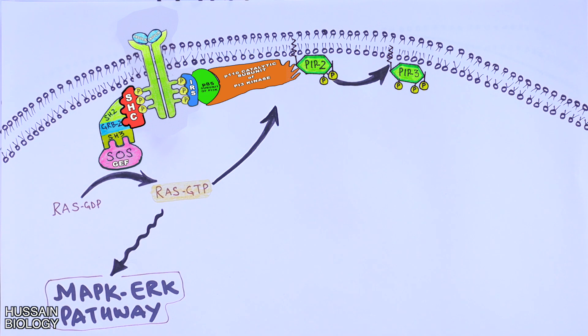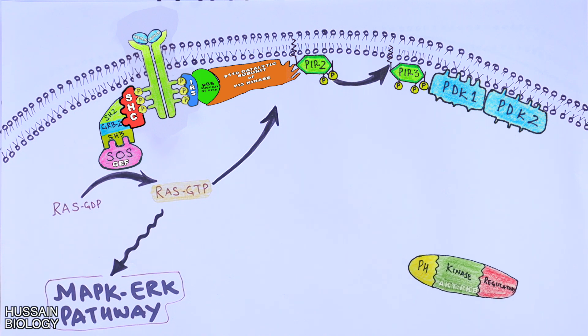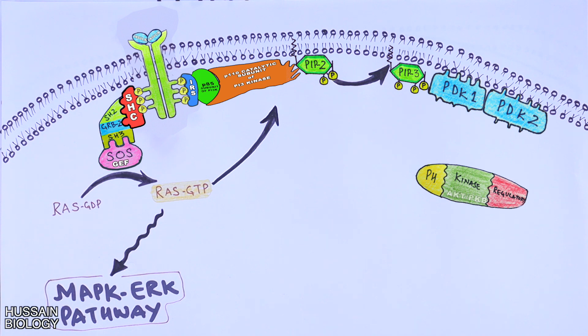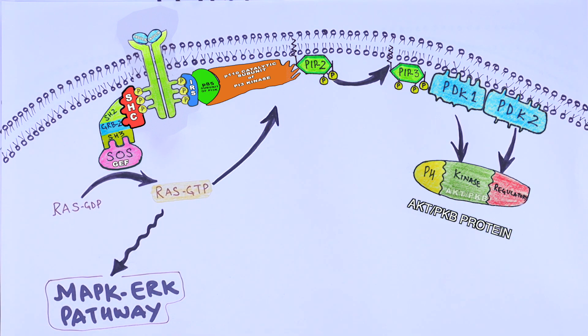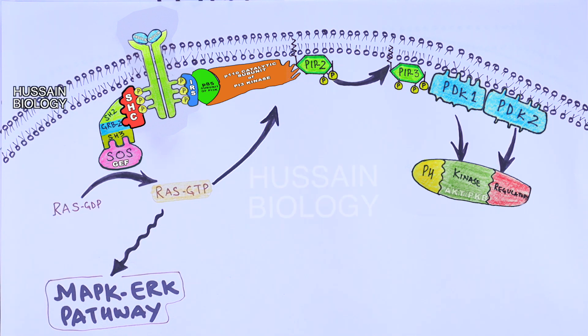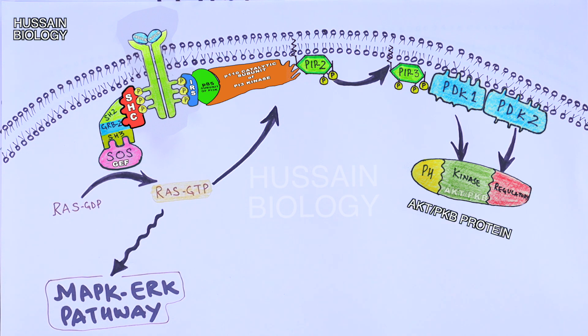Then this PIP3 interacts with PDK1 and PDK2 proteins and drives the recruitment of AKT or PKB proteins towards the membrane. We see here in the animation the AKT proteins or PKB protein is then translocated towards the membrane where they interact with PDK proteins. PDK is the master kinase; it phosphorylates the AKT proteins at different sites.